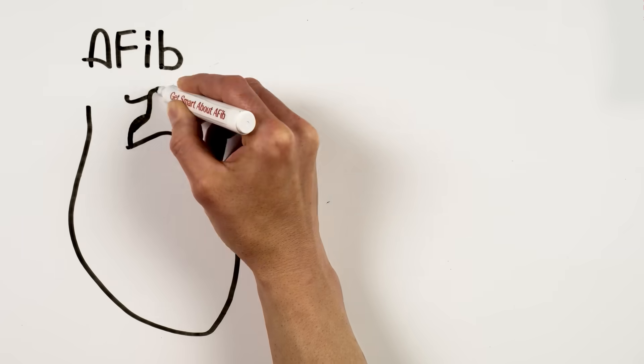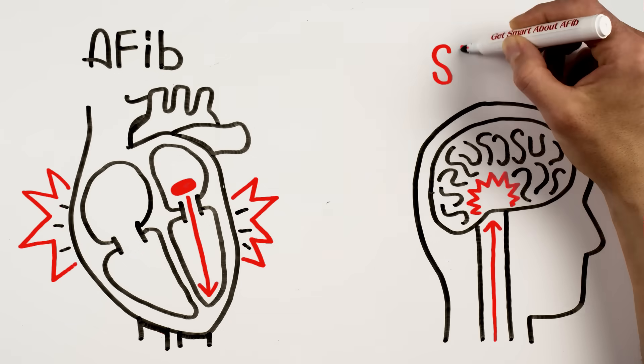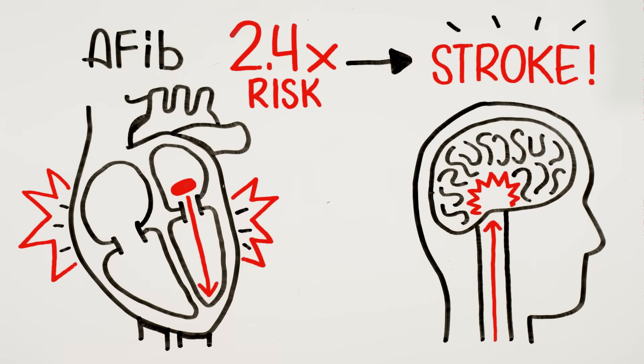With AFib, blood may pool in your heart and form blood clots that can travel to the brain and cause a stroke. AFib more than doubles your risk of stroke.